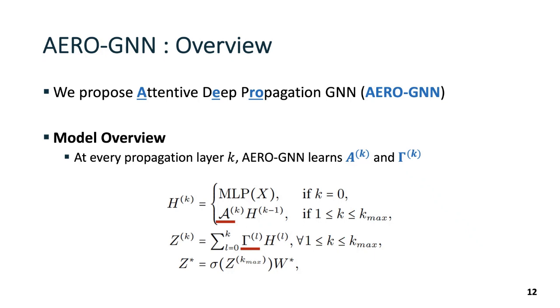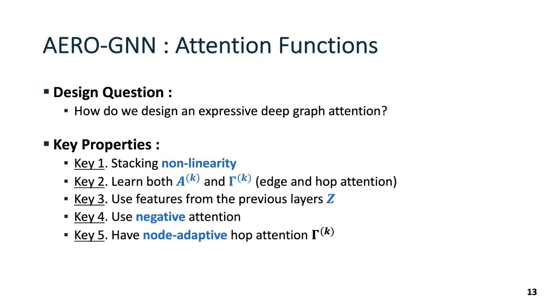In designing the attention functions in learning edge and hop attention, we set five different key differences to the prior methods such that ArrowGNN may remain expressive over deeper layers. The keys are stacking non-linearity over deeper layers, learning both edge and hop attention, using features from previous layers z, learning negative attention, and last, learning node adaptive hop attention. Please refer to the details in our original paper.